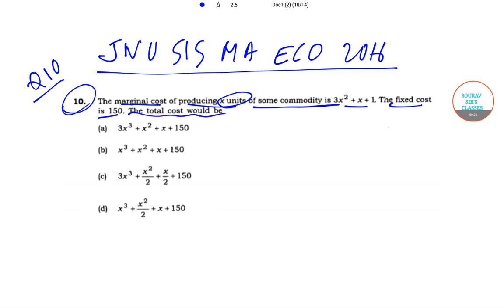The total cost would be - the options given are: Option A is 3x³ + x² + x + 150. Option B is x³ + x² + x + 150. Option C is 3x³ + x²/2 + x/2 + 150. Option D is x³ + x²/2 + x + 150. These are the four options.